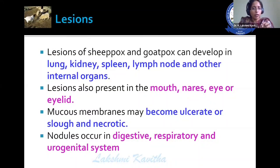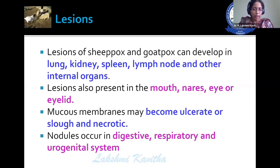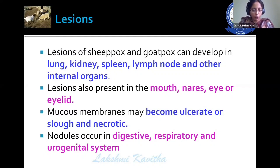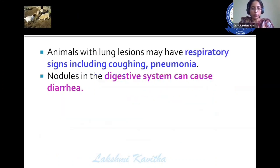The lesions of this disease develop on the lung, kidney, spleen, lymph nodes, and other internal organs, along with lesions on the mouth, nails, eye, and eyelids. Mucous membranes ulcerate, slough off, and become necrotic due to secondary bacterial complications. Nodules in the digestive, respiratory, and urogenital systems lead to complications like digestive disturbance, pneumonia, and abortions.